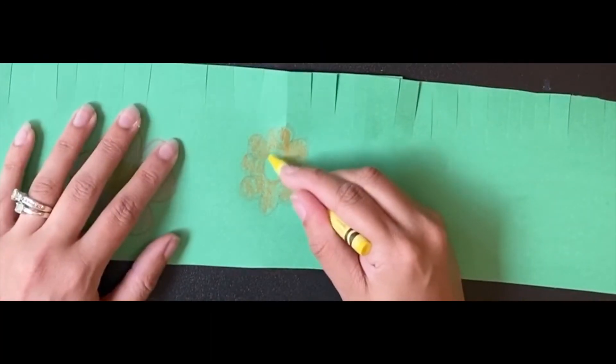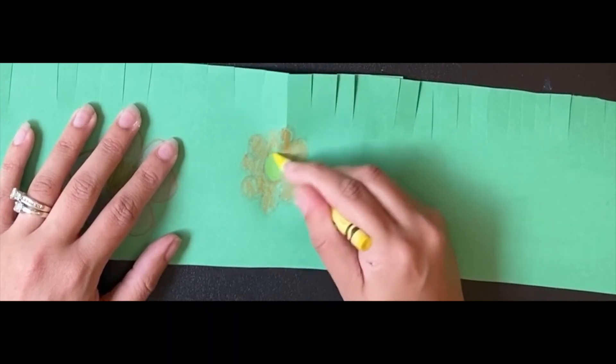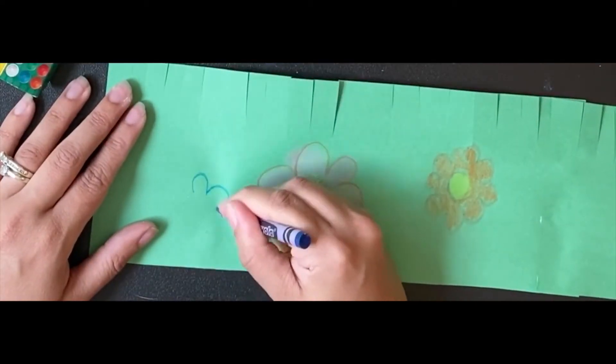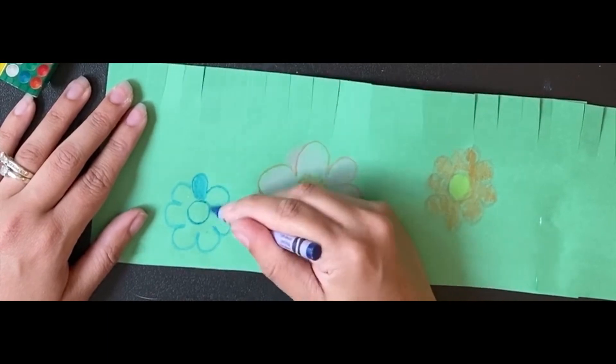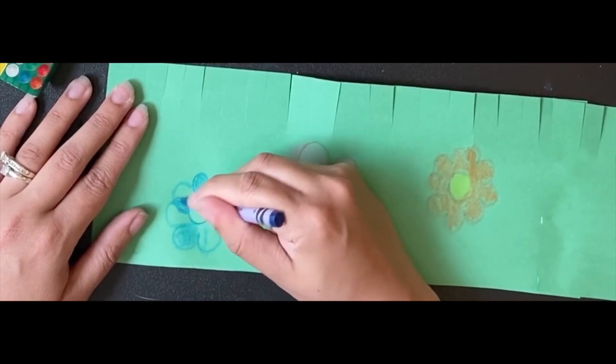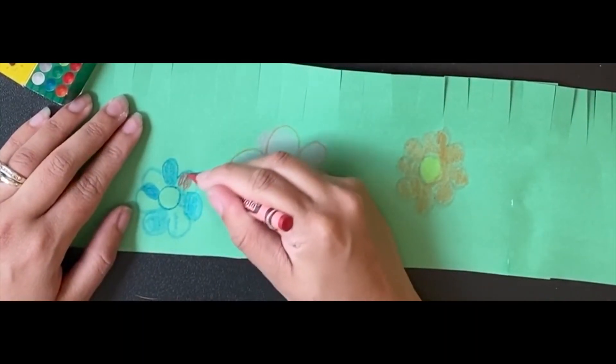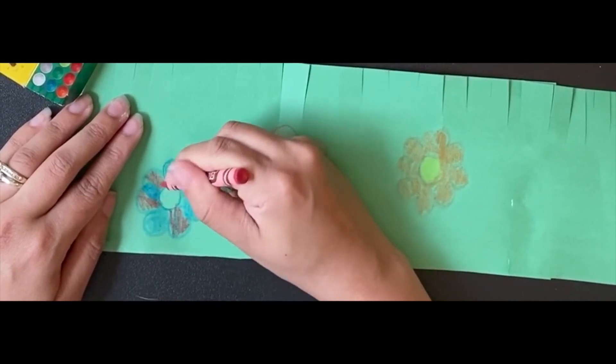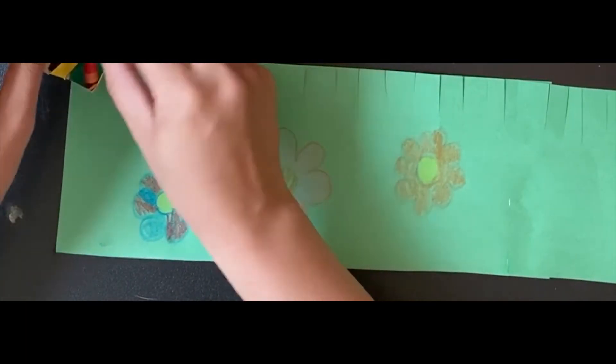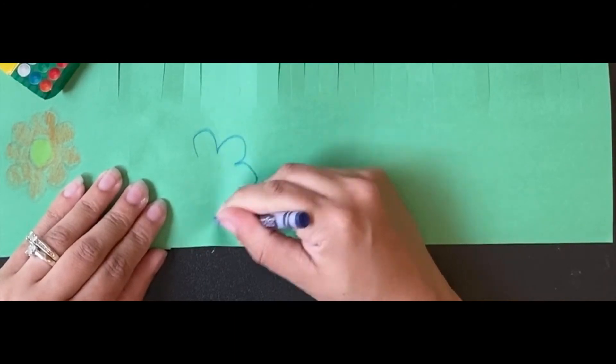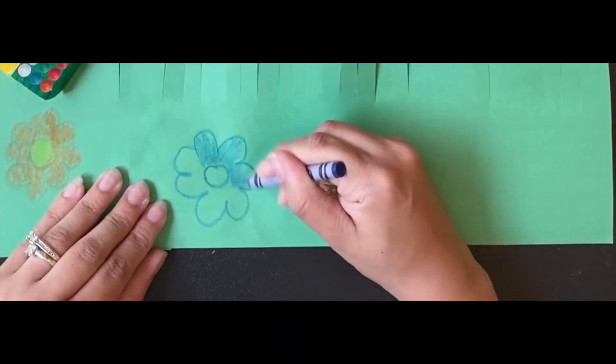I'm going to just change the color to color the center yellow and then I'll keep going and making a lot of different flowers. So you can use your favorite colors to make a pretty flower garden for your crown. You can use lots of colors on your flowers or just one or two. It's all up to you.